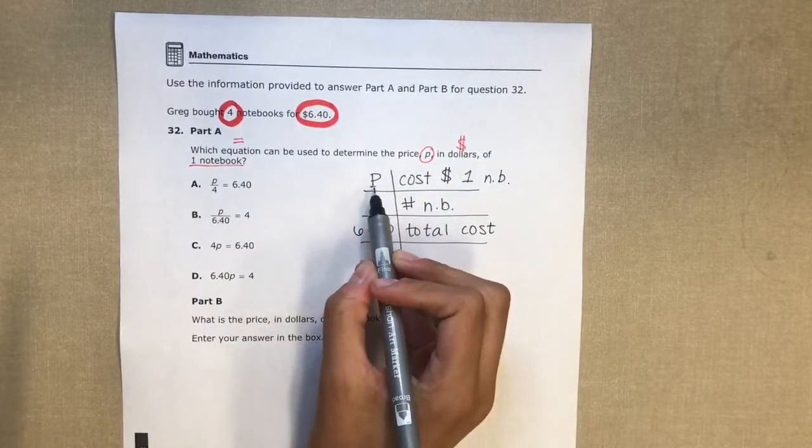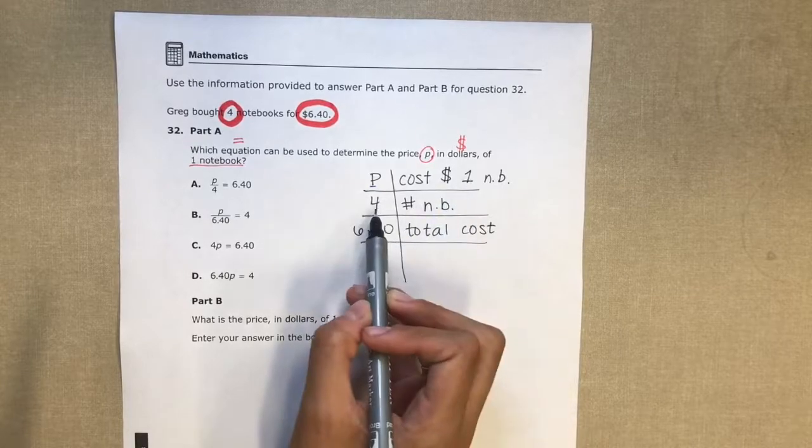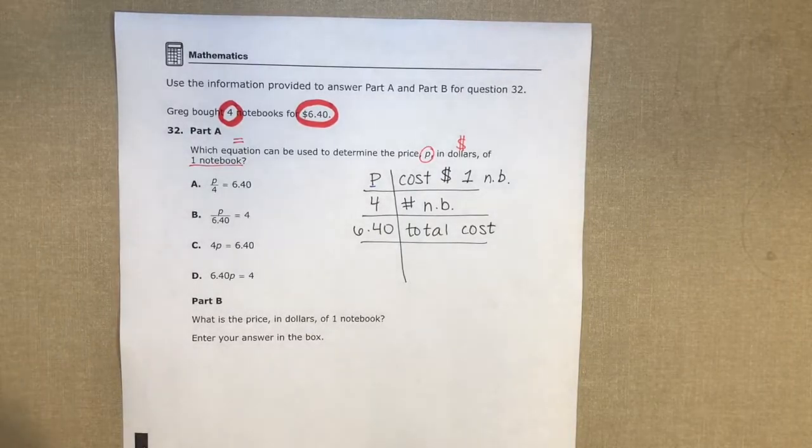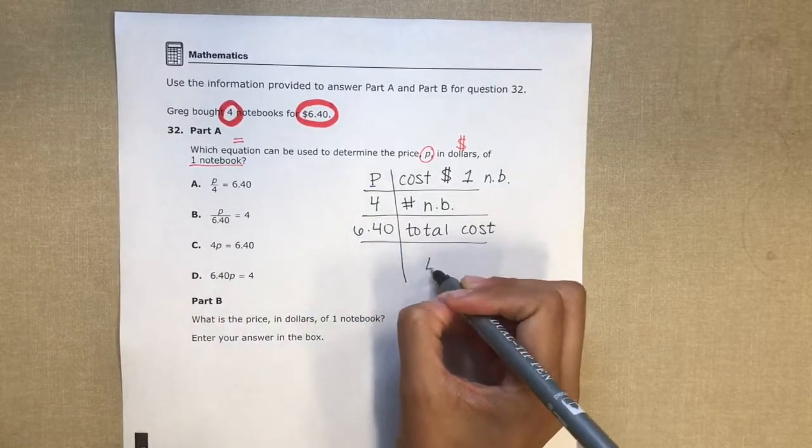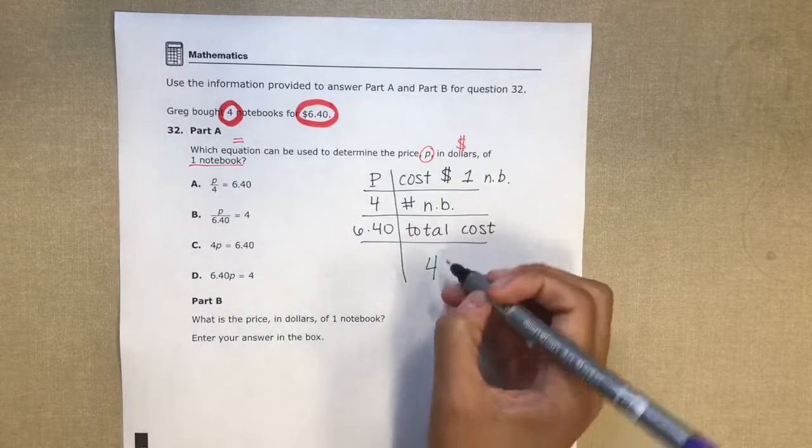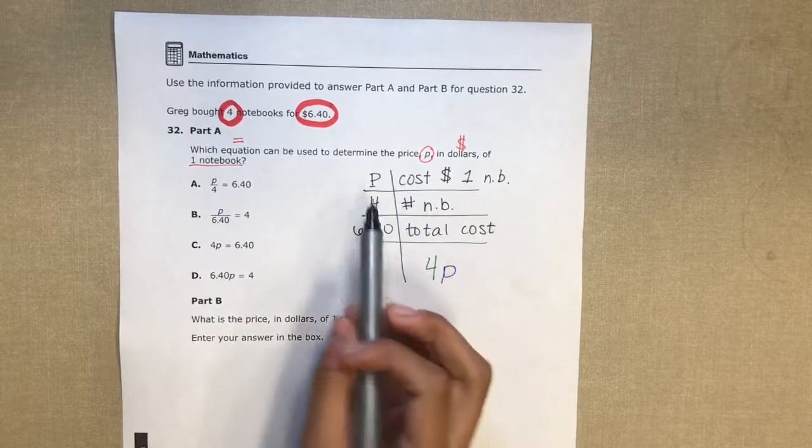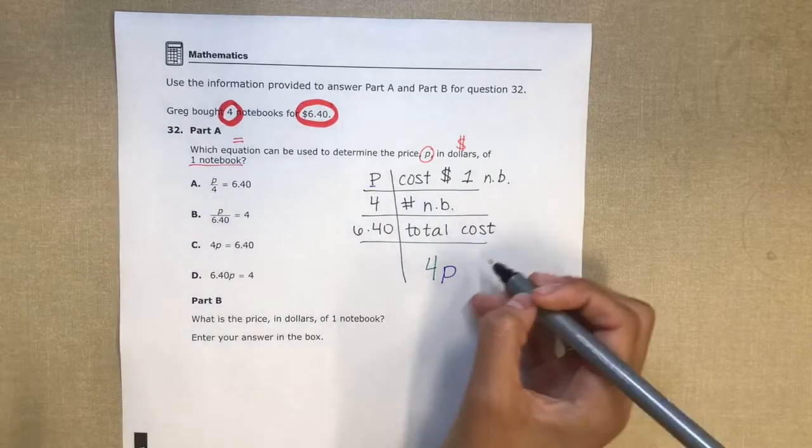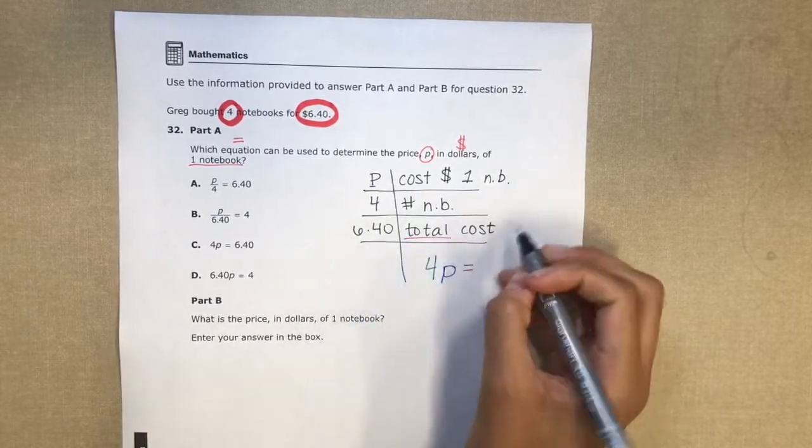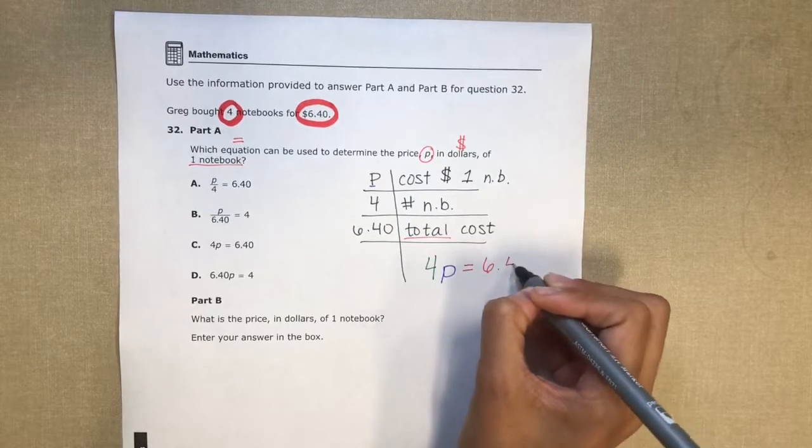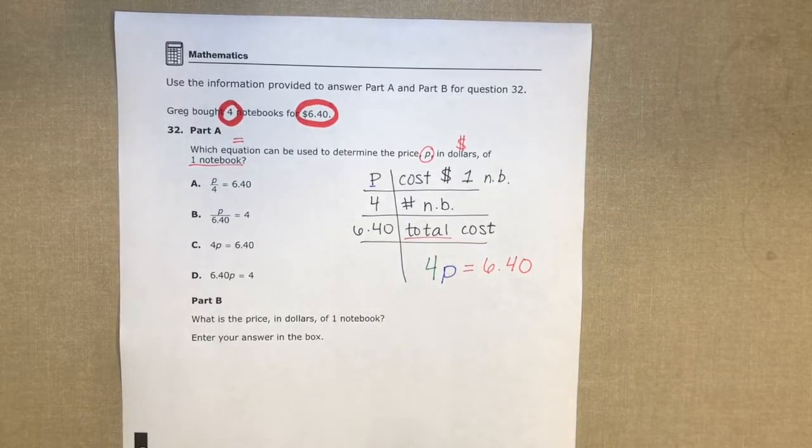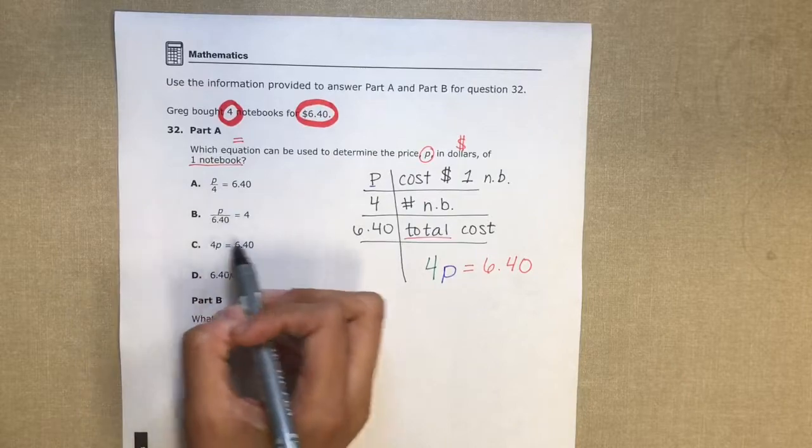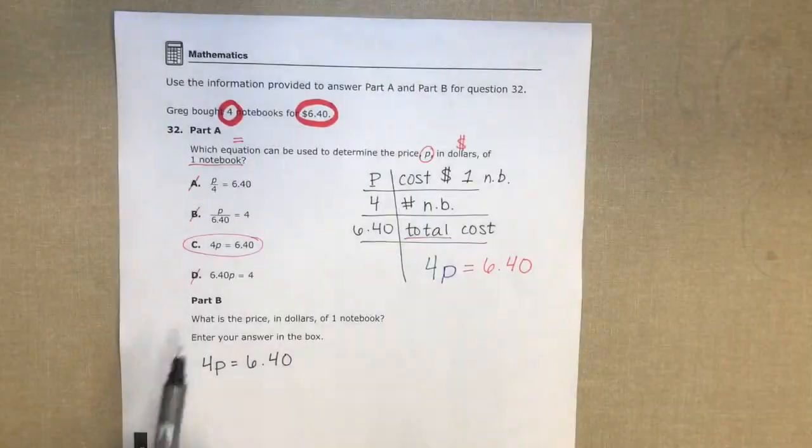If P is the cost of the notebook, I'm gonna multiply the cost of one notebook times the number of notebooks, which would be four. So that means I'm gonna have four times P, so the number of notebooks times the cost of one notebook. And once I do that, I will have the total cost, which I know is six dollars and forty cents. Now I just need to go find the correct answer choice, which is C. Part A is answered.